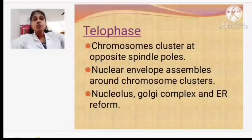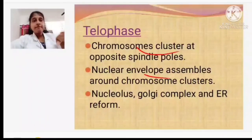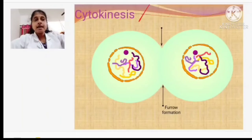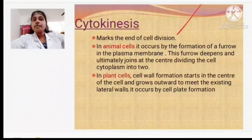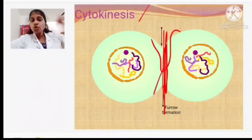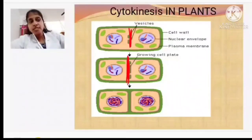In telophase, chromosome clusters form at opposite poles; chromosomes decondense back into chromatin networks; nuclear envelopes reform around each cluster; nucleolus and Golgi complex are synthesized. Then cytokinesis: in animal cells, a furrow in the plasma membrane deepens and joins at the center dividing the cytoplasm into two. In plant cells, a cell plate is synthesized from the center, forming two daughter cells.